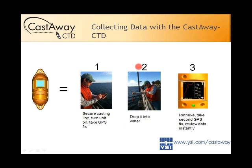From step one to step two is basically half a minute — maybe less. Then drop it in the water. You may want to hold it at the surface for five to ten seconds just to let things equilibrate. Other systems require two to three minutes, but with the Castaway that's not necessary. Let it free fall at about one meter per second, and once it reaches the desired depth, pull it back up. Take your second GPS fix by tapping with the magnetic stylus, then review the data instantly.